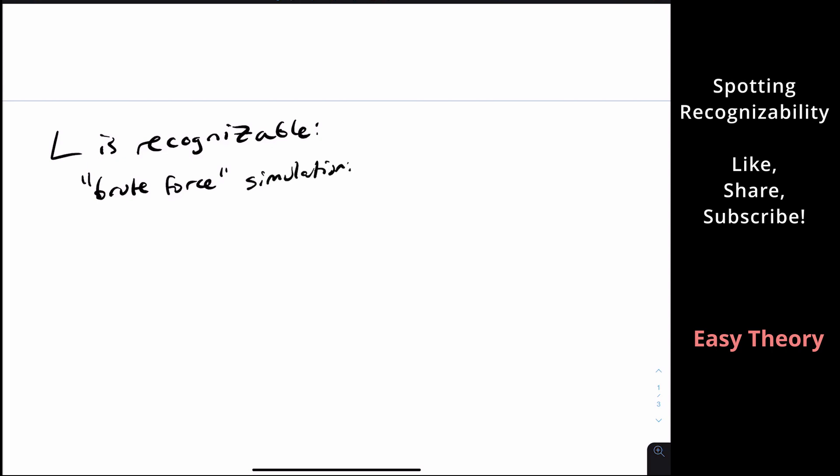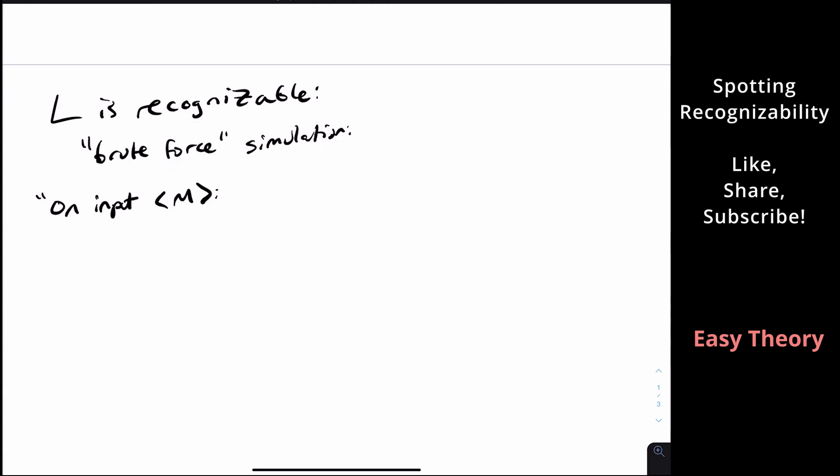So we're going to solve this by brute force. And how are we going to do that? So on input M. So remember, we're trying to recognize L. So we're given a machine M. So then we're going to go over all strings. So for all W in sigma star with the length of W equal to 2020. So all possible strings.